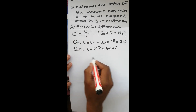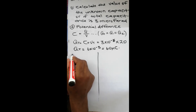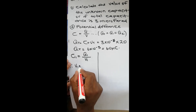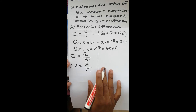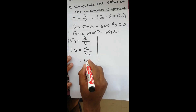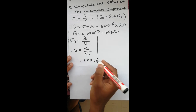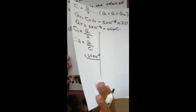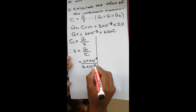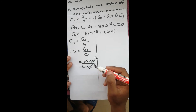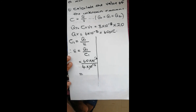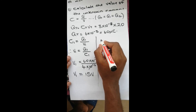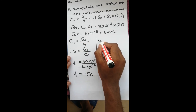For the first capacitor, C1 equals Q1 over V1, therefore V1 equals Q1 over C1. Our charge Q is 60 times ten to the power negative six, and C1 is four times ten to the power negative six. These cancel out and we are left with 60 over 4, which is 15 volts. That is V1.